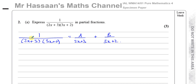You have two linear factors, so each splits into a constant over its linear factor. Because these have to be proper fractions, the numerator must be an order less than the denominator, and an order less than linear is a constant. So it's A over (2x + 3) plus B over (3x + 2).